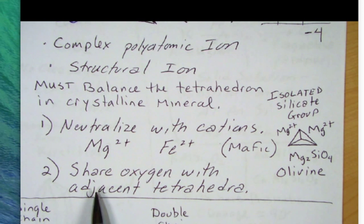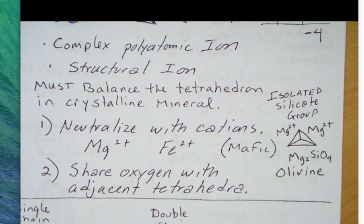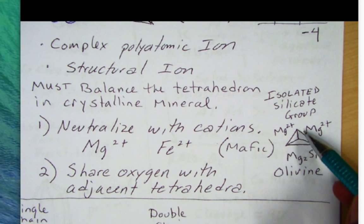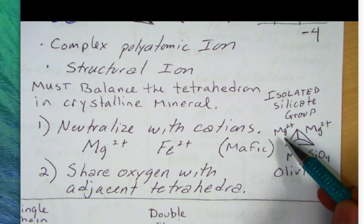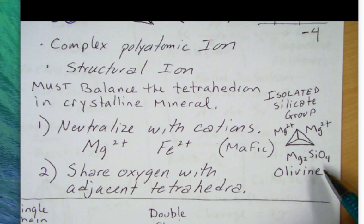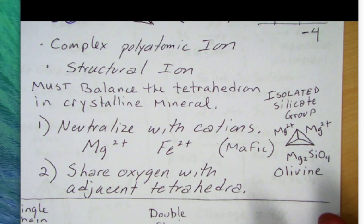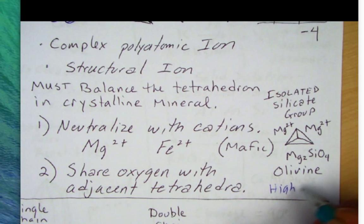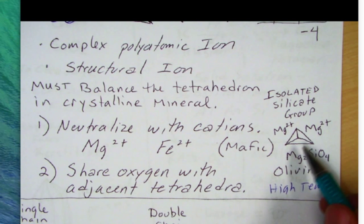In the example of using cations — positively charged ions — note that we'll have the isolated structure with a negative four charge. If we put two magnesium atoms next to it, we can neutralize it, and the formula would be Mg2SiO4. That's a classic olivine group. Olivine is a high-temperature silicate — it forms at high temperatures where we have magnesium and iron. So this is typical of mafic rocks.